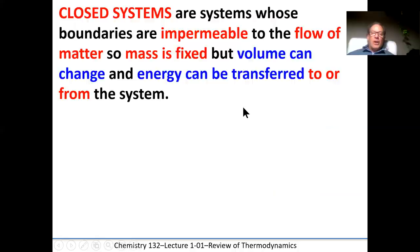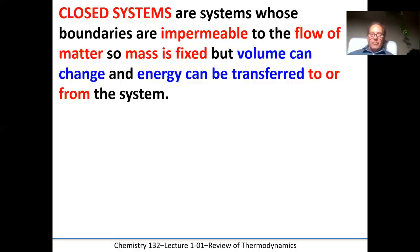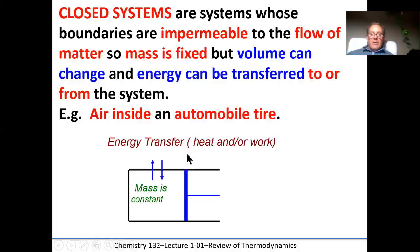Closed systems are systems that are impermeable to the flow of matter in and out. For instance, a good thermos bottle that keeps liquids hot or cold for long periods of time would be classified as a closed system — nothing goes in or out, including heat. The best insulator uses a near vacuum between two layers; with very few molecules present, the ability to transfer heat is diminished, because heat transfer results from particles colliding with one another. Another example of a closed system is the air inside an automobile tire.